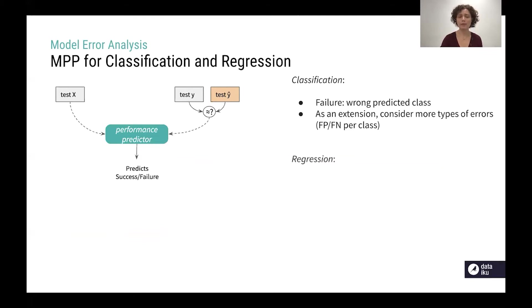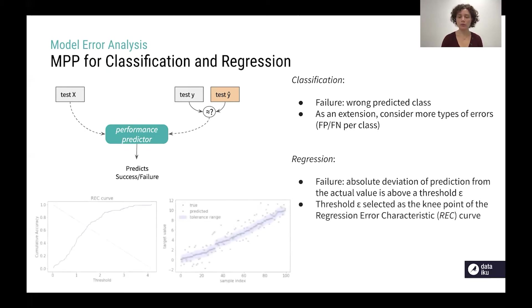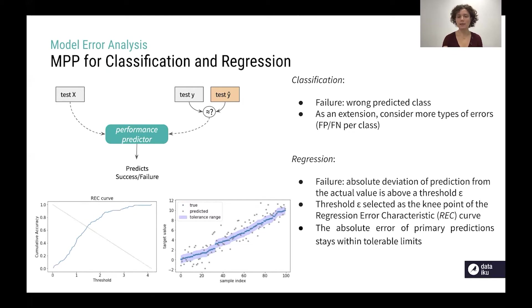If we have a regression task the failure is defined a bit differently. It's a large deviation of the prediction from the actual value and this definition requires defining a tolerance threshold above which the deviation defines a failure. This is computed as the knee point of the regression error characteristic (REC) curve and this allows that the absolute error of primary predictions stays within tolerable limits for those predictions that we defined as success.